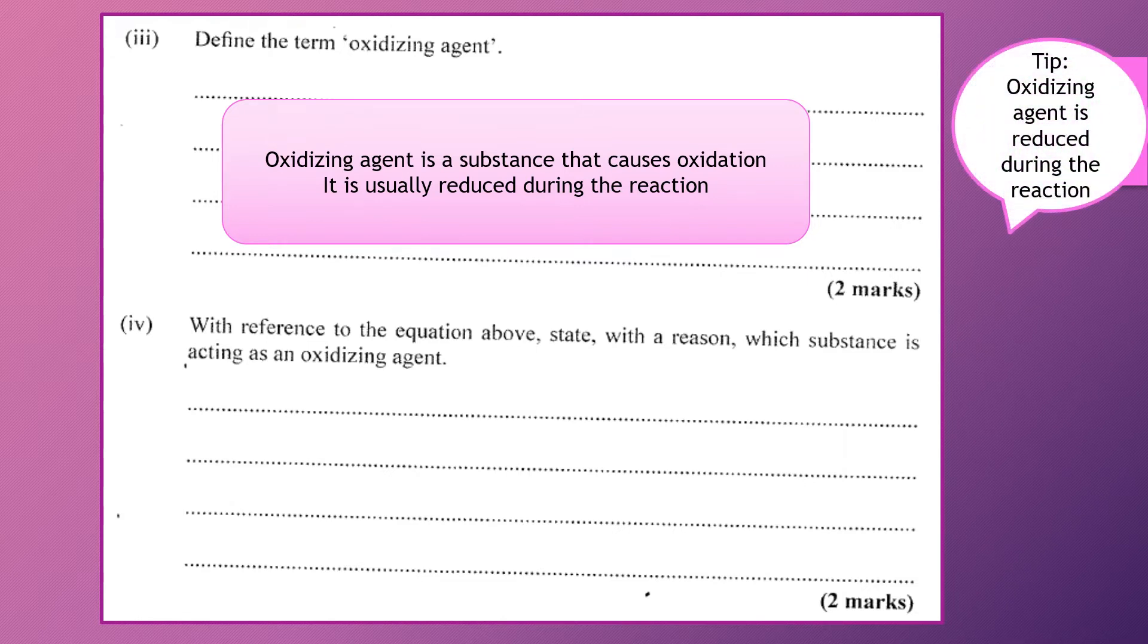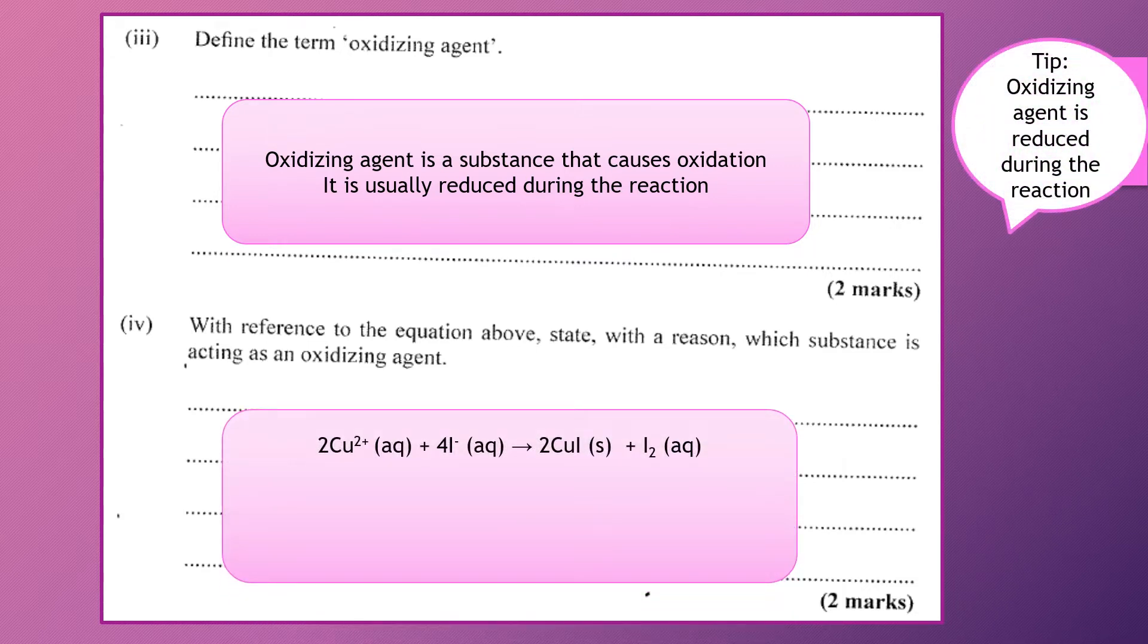So again, looking at the equation that we had in part one, Cu²⁺, 2Cu²⁺ plus 4I⁻ to give me 2CuI plus I₂, that's the equation.